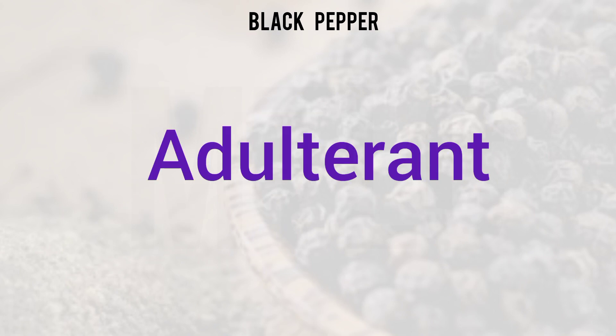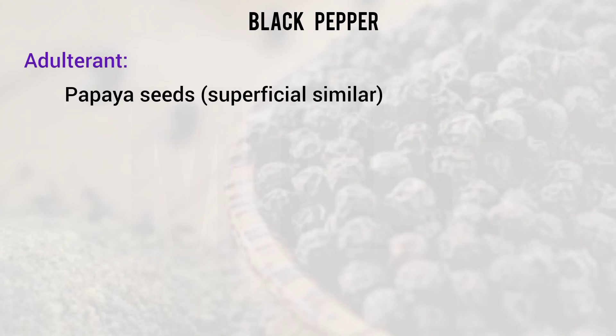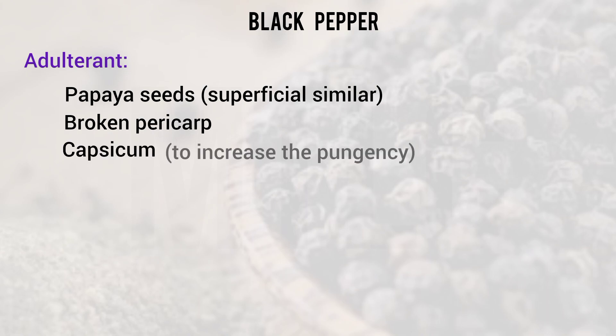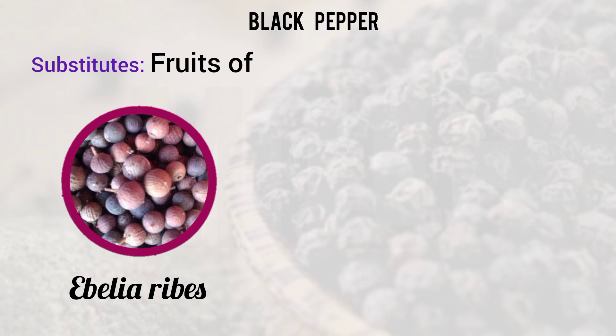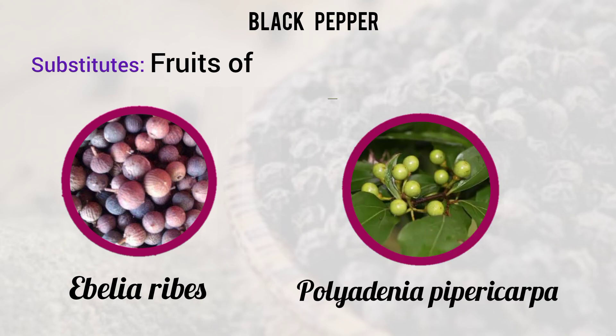Adulteration is a very possible issue. Papaya seeds are normally added as adulterants. Broken pepper and capsicum may also be added to improve apparent potency. The substitute is Embelia ribes, of the species Polyalthia piperacea, whose fruits are substituted.